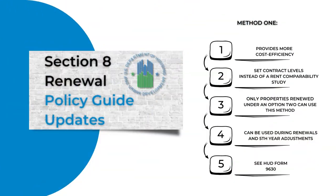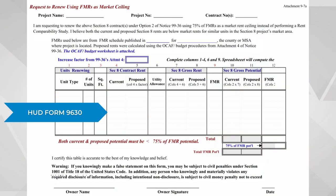This method provides cost efficiency for owners and allows owners to set contract levels instead of using an RCS. Only properties renewed under an option 2 can use this method. This method can be used when renewing contract renewals or your fifth year adjustment.